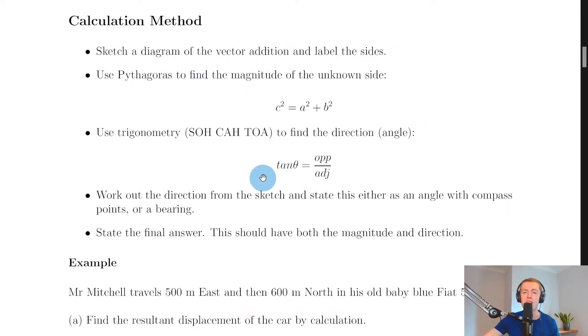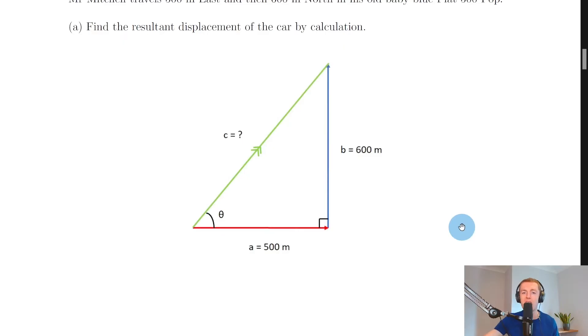So we don't need an accurate diagram drawn with a ruler, but it often helps to start with a little sketch on your page just to see what the vectors are doing. So if we sketch the 500 meters east, this vector here, and then the 600 meters north, this vector here, then we're joining them nose to tail and we can draw on the resultant vector. So we've got this going from starting point here to the finishing point here with our double arrow.